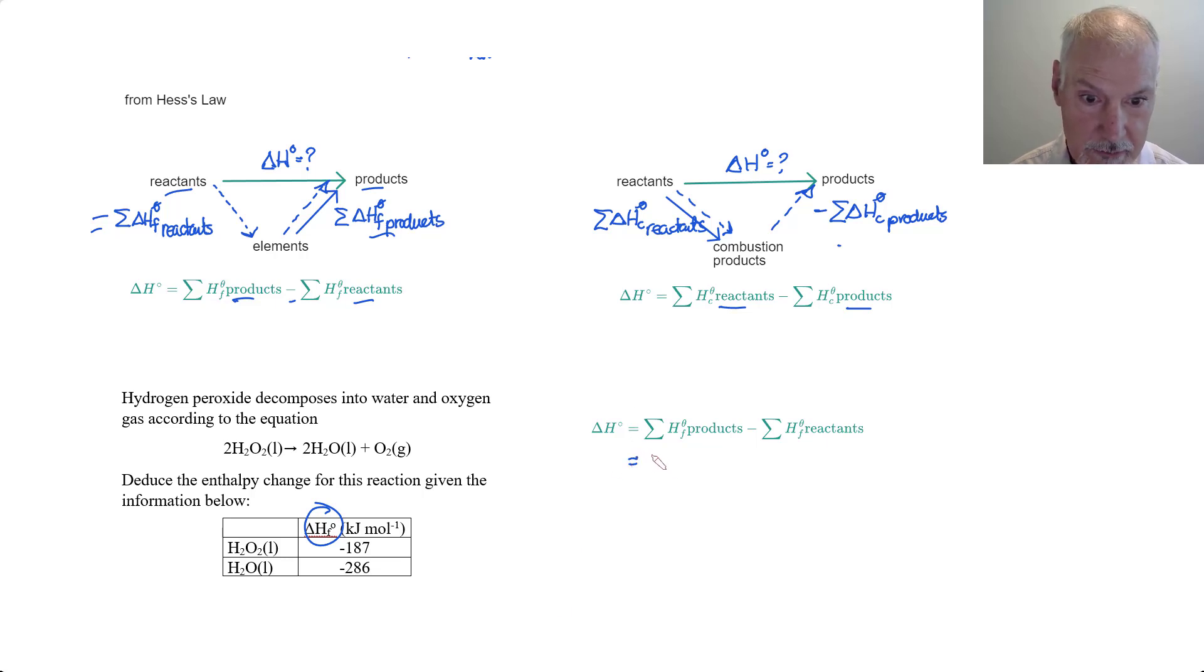Substituting in my values: on the product side I have two water molecules, so two times negative 286, and I have one oxygen. Oxygen is not listed in the table because the enthalpy of formation of elements is zero at standard conditions. Then minus our reactant, we have two moles of it at negative 187. If we put that through the calculator we arrive at negative 198 kilojoules. That would be the enthalpy change using heats of formation for this reaction.